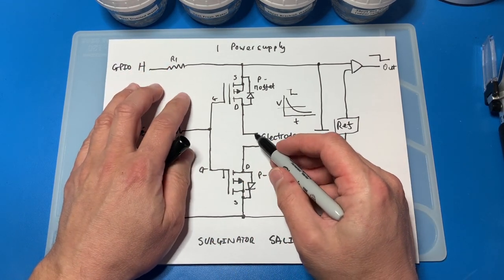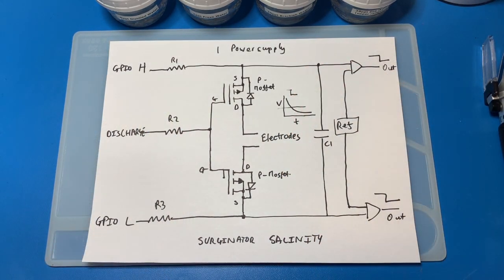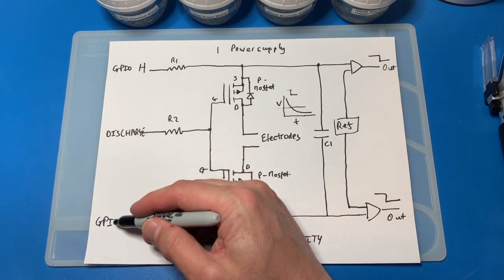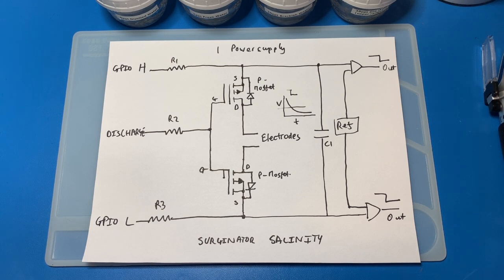And then what happens essentially is the saltier the water, the more it conducts, the shorter this curve is. And also advantageous with this is we can make this one high and this one low and the circuit works the same but the current flows in the opposite direction. So essentially we don't separate out that seawater into its constituents.